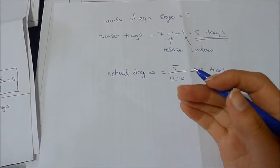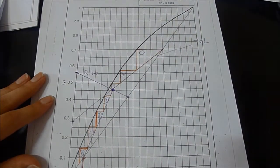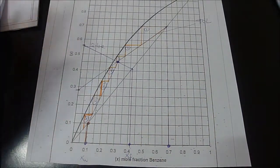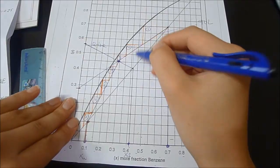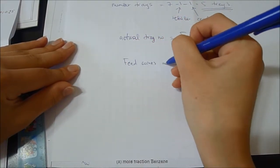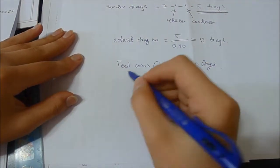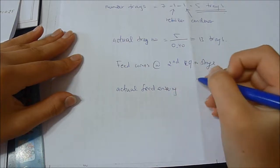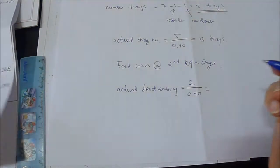We are also asked to find the feed location. Looking at the diagram, Xf is marked and the feed enters at the second equilibrium stage. So the actual feed tray location is: 2/0.40 = 5. The feed enters at actual tray 5.